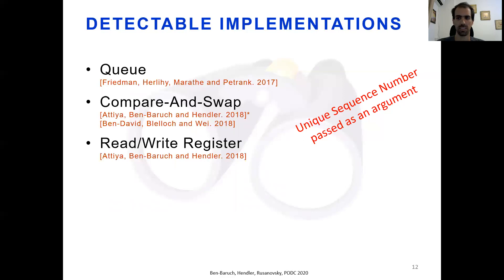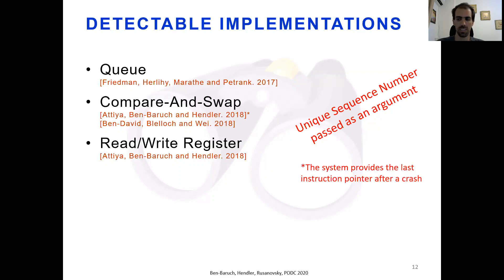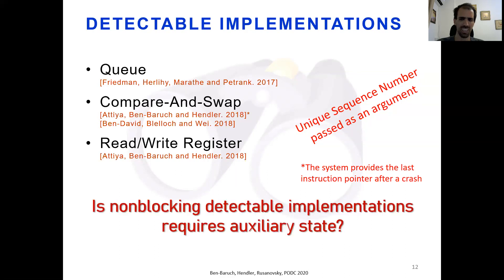In addition to the fact that sequence numbers are used, the sequence numbers must be passed to the operation as an argument. In other words, sequence numbers are not maintained by the operation itself, but rather by the caller of the operation. The only exception is the Atiyah et al. compare-and-swap algorithm; however, it assumes that in case of a crash, the system provides the last instruction pointer. This raises the question: is this kind of auxiliary state — external information supplied by either the caller of the operation or the system — necessary for detectable implementations?